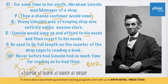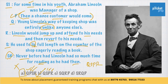For some time in his youth, Abraham Lincoln was manager of a shop. His way of keeping shop was entirely unlike anyone else. What was he doing at the shop? He used to lie full length on the counter of the shop, eagerly reading a book. Then what if a customer would come? He would jump up and attend to the customer's needs and then revert to his own needs — reading a book. So this follows a sequence. Therefore the answer is Option B.